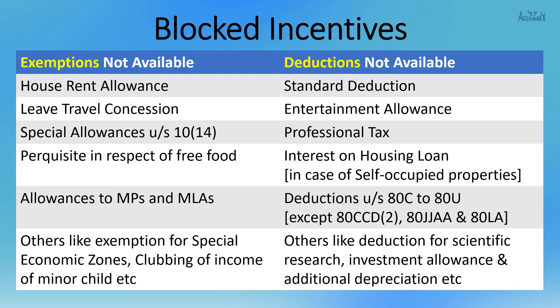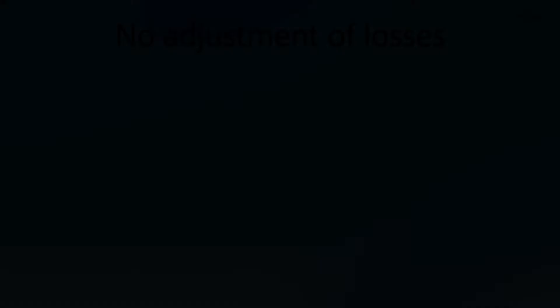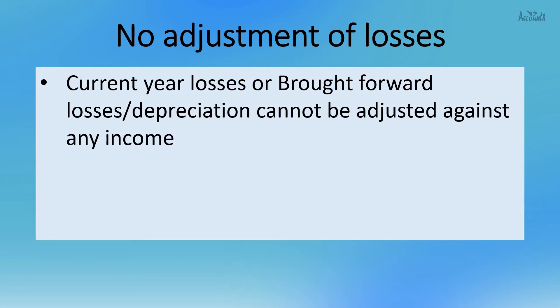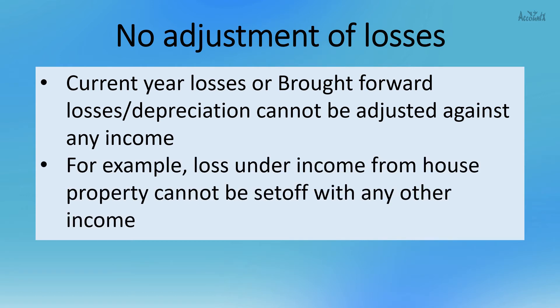The next restriction is no adjustment of losses. If you opt for the alternative tax regime, current year losses, brought forward losses, or unabsorbed depreciation cannot be adjusted against any income. For example, loss under income from house property cannot be set off with any other income.